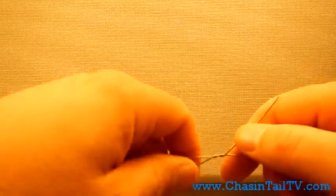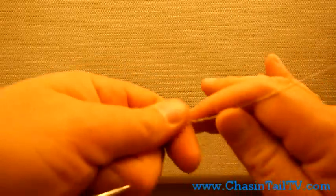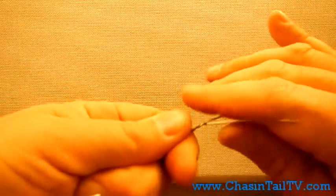As you can see right there, both those wires are wrapped around each other, which locks into place and makes the haywire twist.